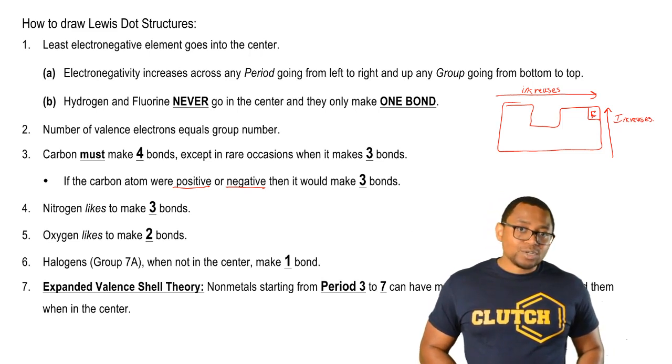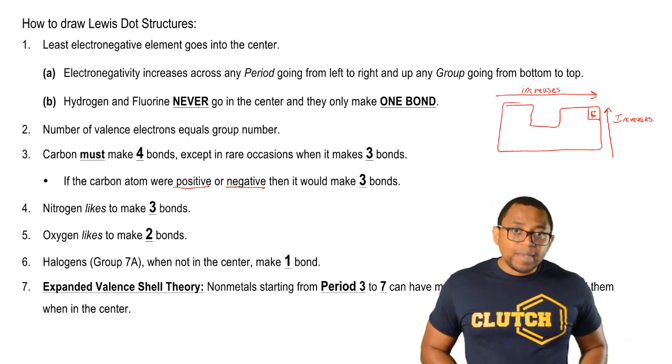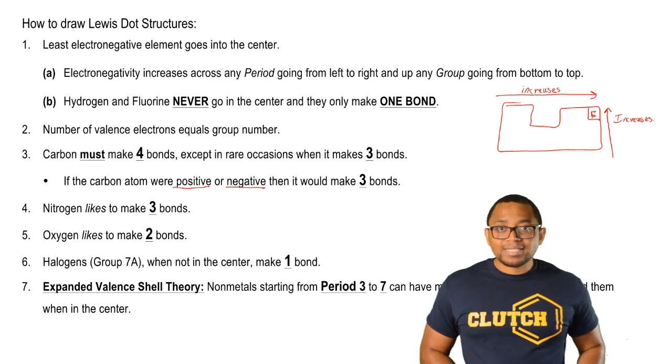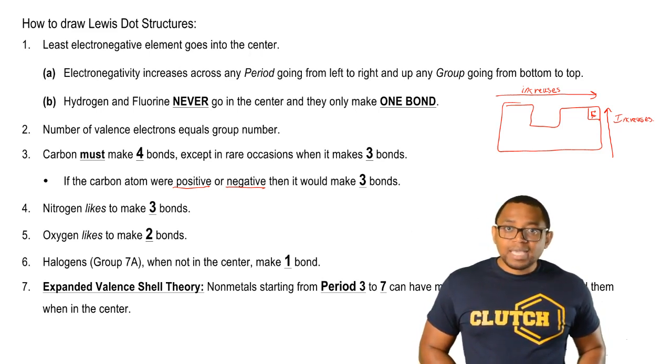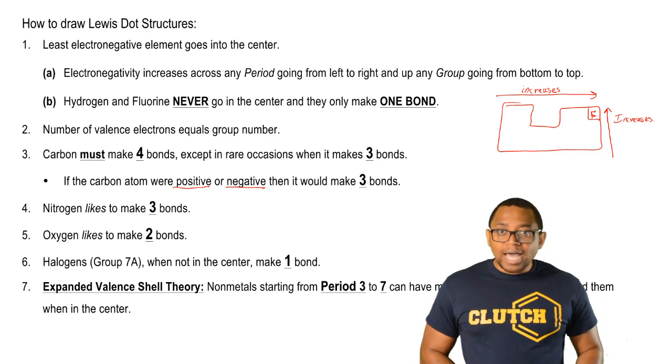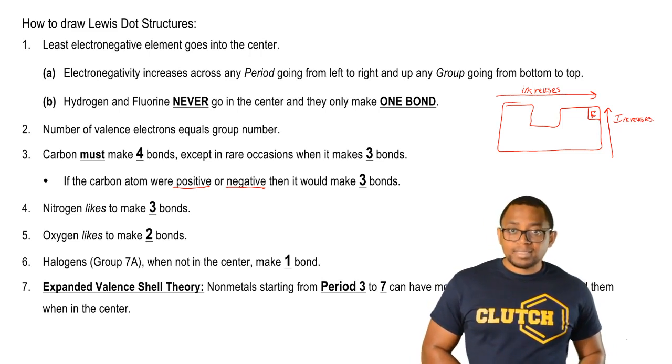Nitrogen, it's in group 5A, so it's three spaces away from being a noble gas. That's why it likes to ideally make three bonds. By making those three bonds, it gets to share three extra electrons to become just like a noble gas. But the word 'likes' is different from the word 'must'.